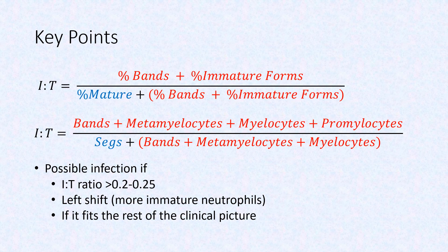An IT ratio of greater than 0.2 to 0.25 is suggestive of infection or sepsis. In real practice, the IT ratio will only be a piece of the bigger puzzle. Always take the rest of the assessment findings in mind and have a low threshold for treating sepsis.